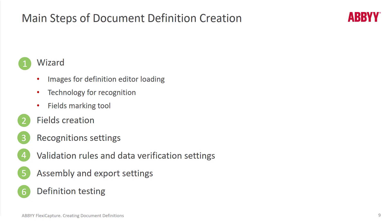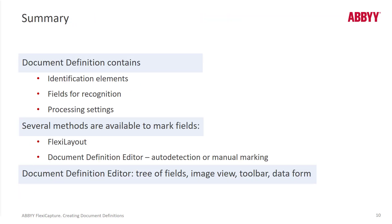Finally, you want to test your document definition. You can actually test it right in the document definition editor, which is a real time saver. To recap: a document definition has the ability to identify a document, it specifies specific fields for recognition, and those fields have certain settings. For a fixed form, you rubber-band the areas to collect data from. For semi-structured or unstructured forms, you use FlexiLayout Studio to create the algorithms, then import that logic into the document definition editor where you set up exports and data validation checks.